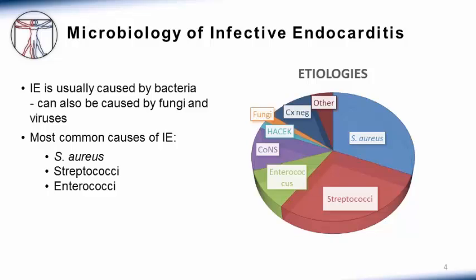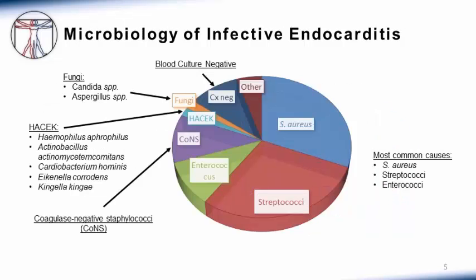Infective endocarditis is usually caused by bacteria, but can also be caused by fungi and viruses. This pie chart shows the distribution of microorganisms causing infective endocarditis. The three most common causes are staph aureus, streptococci, and enterococci. Coagulase negative staph, pictured in purple here, are also a relatively common cause of infective endocarditis.